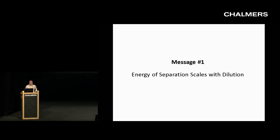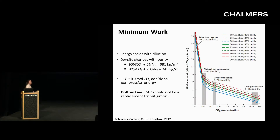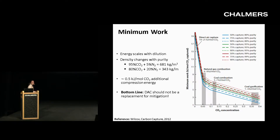The first message: energy of separation scales with dilution. What this plot is showing on the right-hand side is the minimum work on the y-axis — the minimum work required to do a separation process. So if you have CO2 separation from air, this would be the minimum work associated with separating CO2 from 400 parts per million concentration. The x-axis shows CO2 concentration increasing.